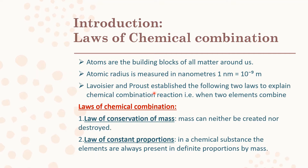Lavoisier and Proust also came up with the Law of Constant Proportions: when two elements combine, either of the same type or different types, they combine in definite proportions to form compounds. That is, mass can neither be created nor destroyed, and the elements in a chemical substance are always present in definite proportions by mass.